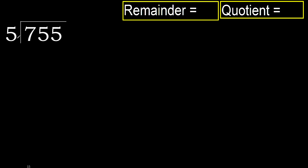755 divided by 5. 7 is not less, therefore start with 7. 5 multiplied by which number is nearest to 7 but not greater? 5 multiplied by 2 is 10 — 10 is greater. Multiply by 1 is 5. It is not greater. Subtract.